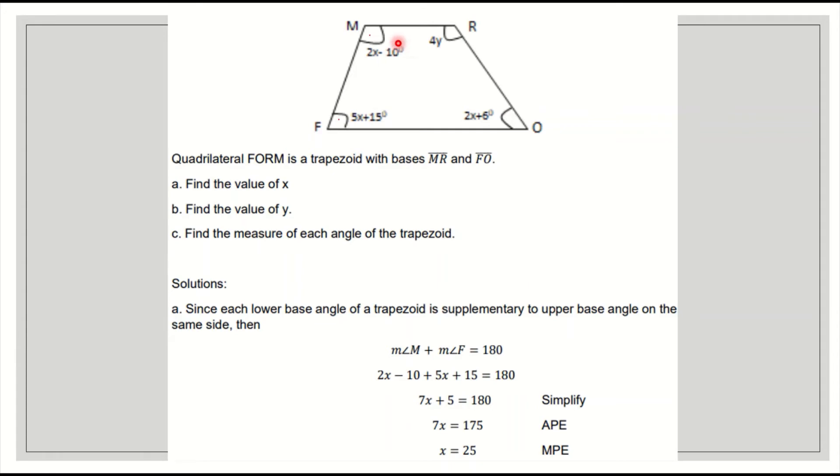Let's substitute the given values. 2x minus 10 plus 5x plus 15 is equal to 180. Combining like terms: 2 plus 5 is 7x, and minus 10 plus 15 is 5. So 7x plus 5 is equal to 180. Transpose, subtract 5, it becomes 175. So 7x is equal to 175. Divide both sides by 7, that would be 25. The value of x is 25.